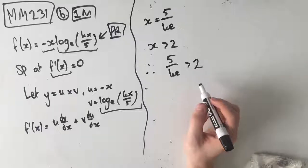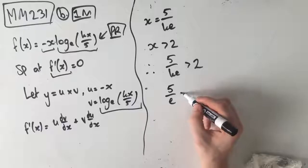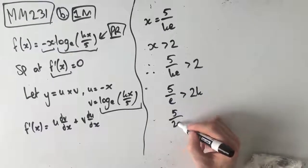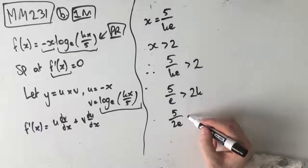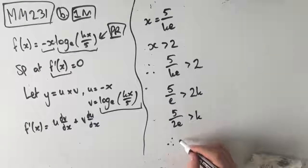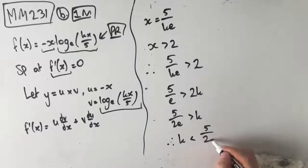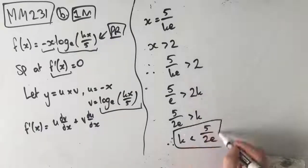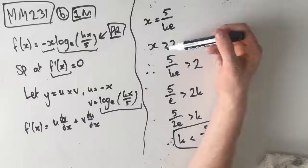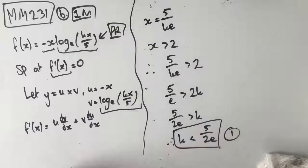We just rearrange: 5 on e is greater than 2k, which means 5 over 2e is greater than k. Rewriting this as k is less than 5 over 2e — this is your first and only mark. Just keep in mind that if x is greater than 2, then 5 on ke has to be greater than 2 as well.